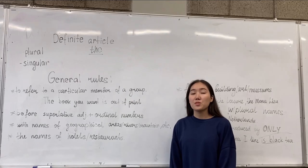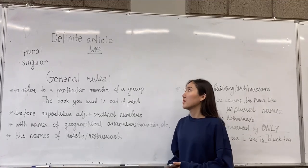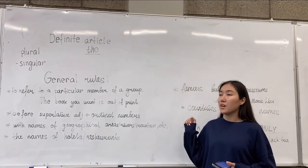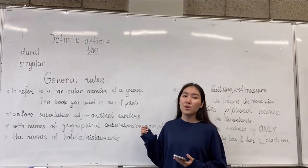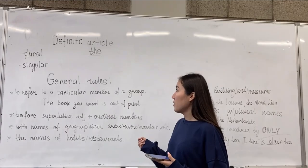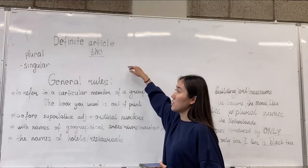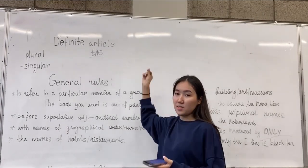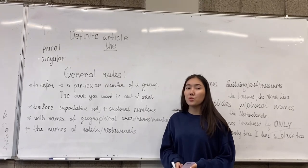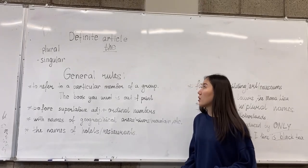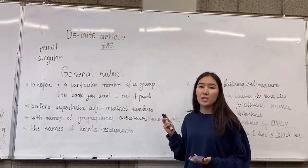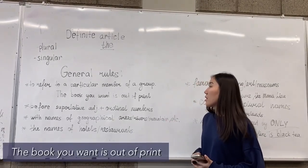The word 'the' is one of the most common words in English and it is our only definite article. Nouns in English take a definite article when the speaker knows that the listener already knows what they are referring to. The definite article is used before plural and singular nouns when the noun is specific or particular. We use the definite article to refer to something already mentioned. For example: 'the book you want.'